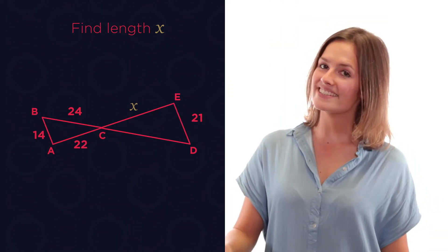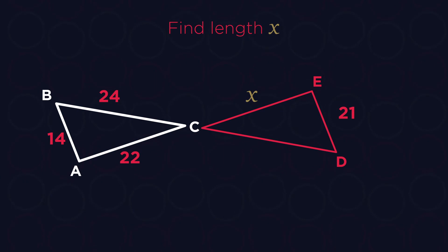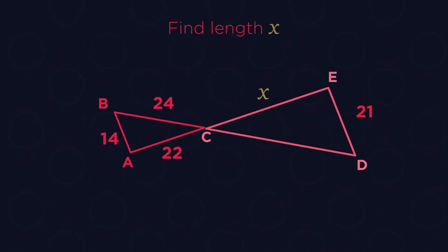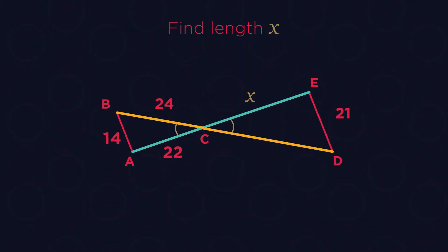There is just one different type of question that we need to be aware of. Triangles ABC and CDE are similar because sides AB and CDE are parallel and the angles at C are equal. Lengths AC and CE correspond, and the length BC and CD correspond.